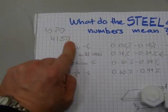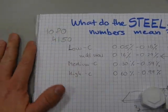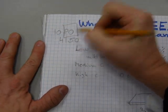Now what does this have to do with the numbering system? These last two digits will give you the percentage of carbon content, very simple.